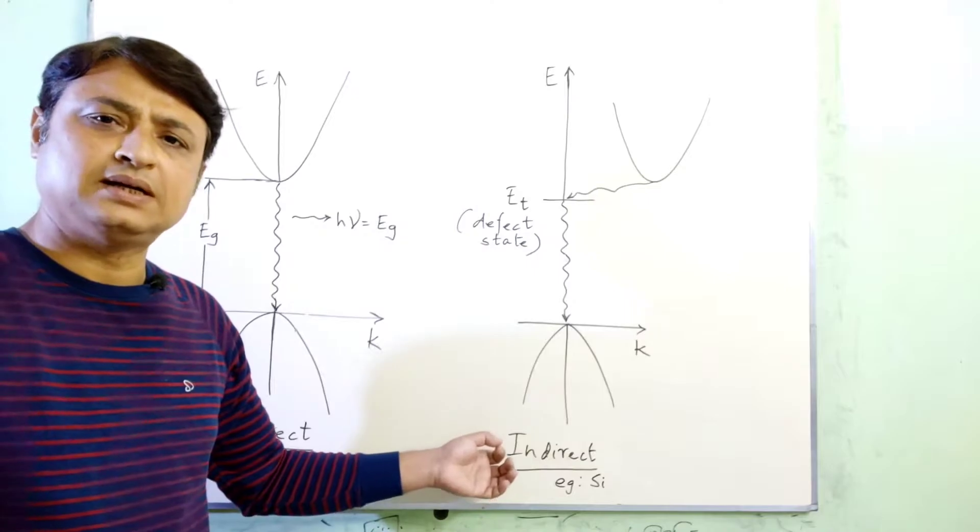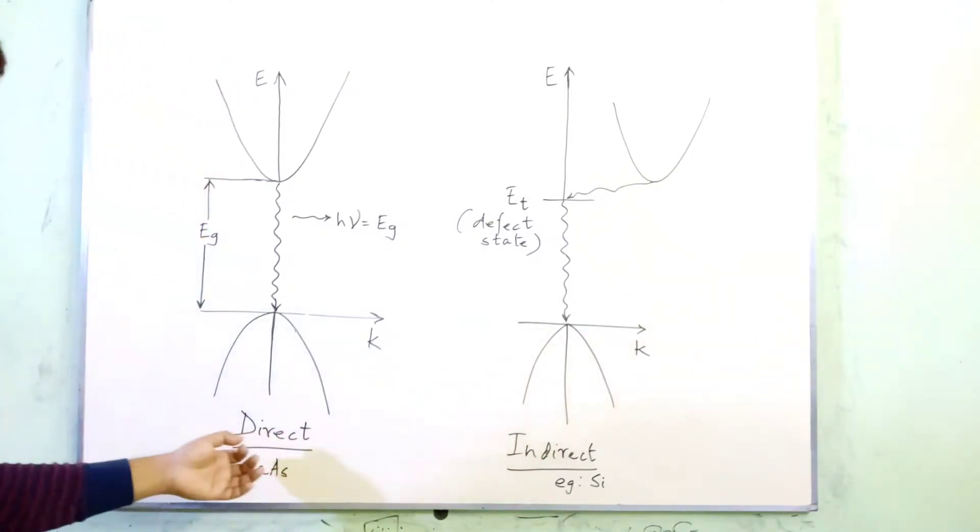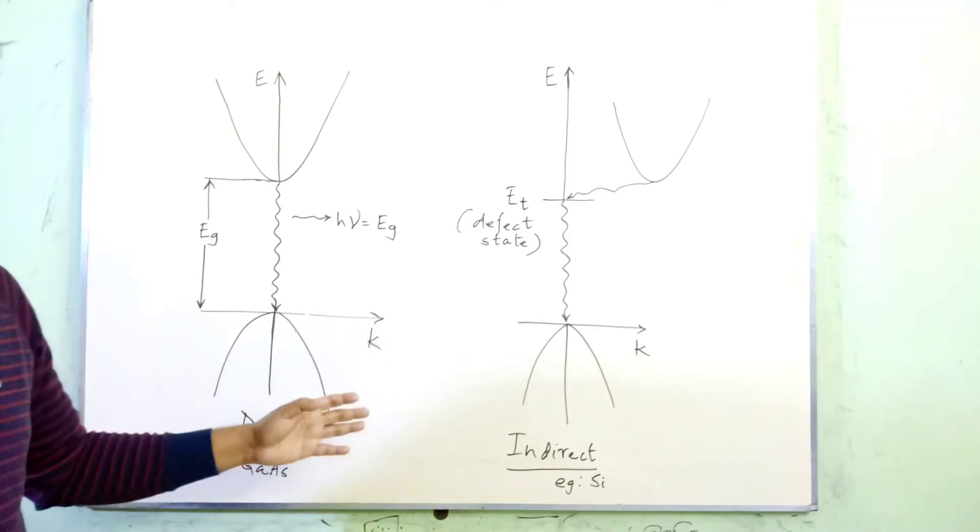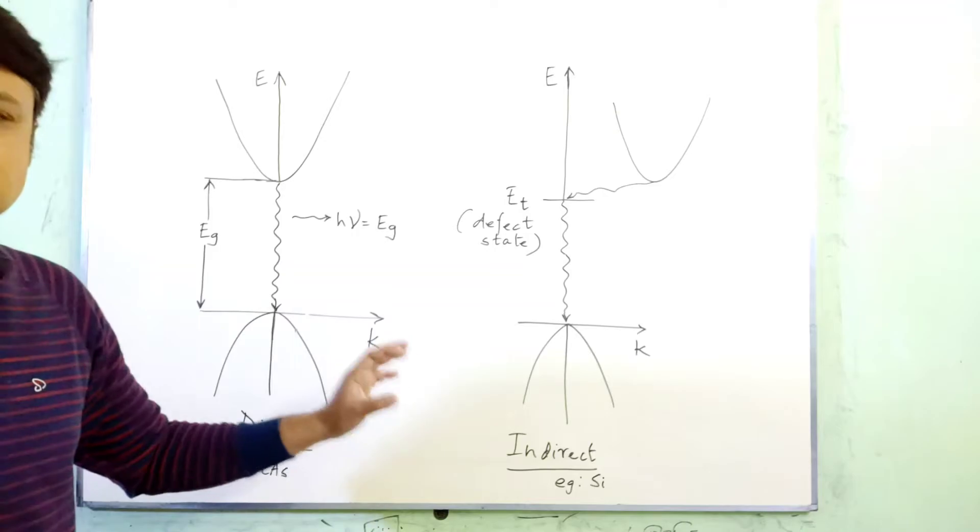An example of an indirect semiconductor is silicon, and for the direct bandgap semiconductor, the example is gallium arsenide. Now let's jump into this figure. Why has it been shown here?